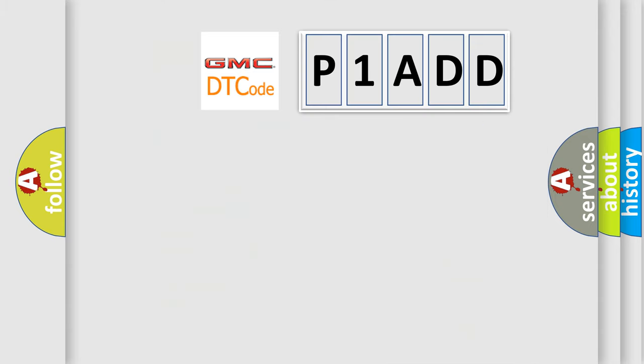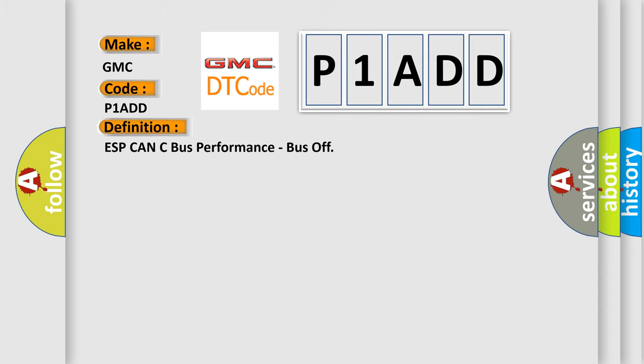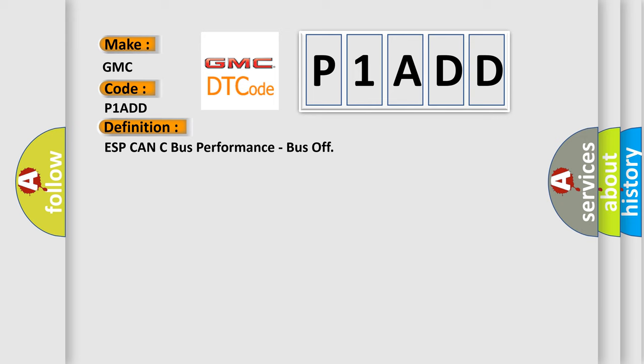So, what does the diagnostic trouble code P1ADD interpret specifically for GMC car manufacturers? The basic definition is: ESP CAN bus performance, bus off. And now here is a short description of this DTC code.